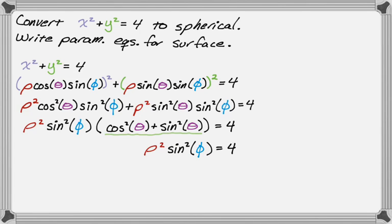Now I need to take square root. It's technically plus or minus, but you don't lose anything if you just go with the positive. So I'm going to say rho sine of phi is equal to two. And then I'm going to divide through by sine of phi. And when you divide by sine, so you have two over sine, but one over sine is equal to cosecant. So I'm going to write it as rho is two cosecant of phi.